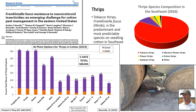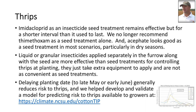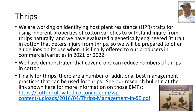Our research here at the Edisto REC has discovered much about controlling thrips in cotton, including that the most important species is tobacco thrips and that this species is developing resistance to the broadly used neonicotinoid insecticides. We have learned that the length of protection provided by seed treatments is now much abbreviated, and insecticides applied separately in the furrow are better than seed treatments. Our research has also shown that delaying planting date can reduce injury risk from thrips, and there is a free online tool for producers to check that risk before planting. We are looking for natural host plant resistance traits in cotton and have evaluated a new genetically engineered BT trait that provides protection from thrips that will be available soon.